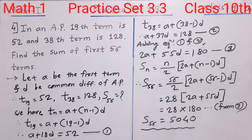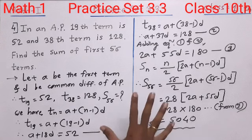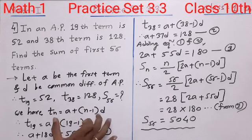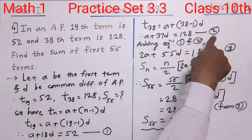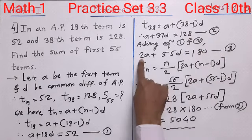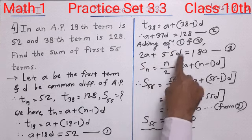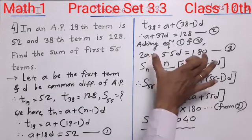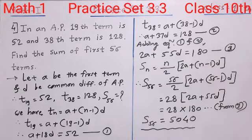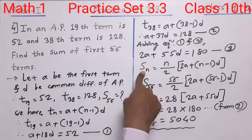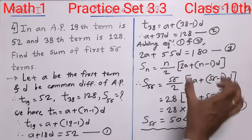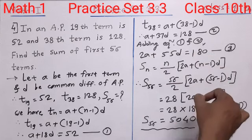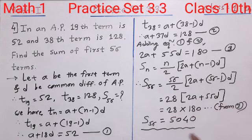I hope you understood this question. You have to use two formulae here: the formula for Tn and the formula for Sn. Using the Tn formula, you get two equations for T19 and T38. Adding both equations gives equation 3: 2A plus 55D equals 180. You cannot simplify it further, so you use it in the Sn formula to find S56. Just remember this is a very different type of example.